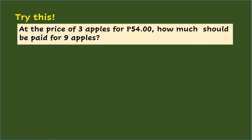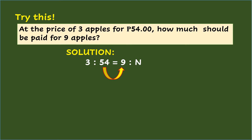Let's try this. At the price of 3 apples for 54 pesos, how much should be paid for 9 apples? Set up the ratios in proportion. The first ratio is 3 is to 54, wherein 3 is the number of apples and 54 is the cost. Following the order of items, the second ratio is 9 is the number of apples and n is the missing cost. Multiply the means: 54 times 9 equals 486. Dividing the product 486 divided by 3 equals 162. So the missing cost for 9 apples is 162 pesos.